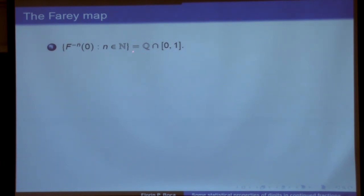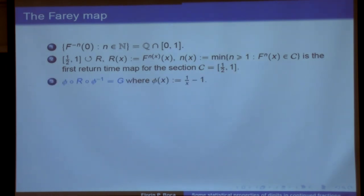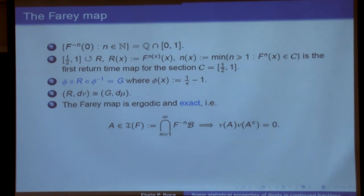The inverse image of zero under the Farey map gives us all rational numbers, showing in particular that rational numbers are countable. The Gauss map gives the first return time for the Farey map with respect to the section (1/2, 1). The first return time map and the Gauss map are conjugated, and everything can be done explicitly. The Farey map has an invariant measure that is not finite, so mixing doesn't really make sense. One studies instead exactness as a substitute.